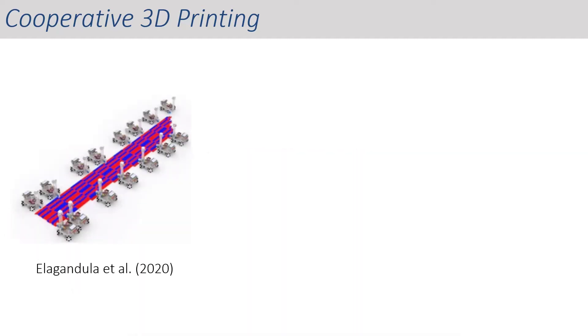Partitioning a part into multiple sub-volumes, or chunks, is a common approach in cooperative 3D printing. However, a simple partitioning often results in weak interfaces between sub-volumes printed by different robots.